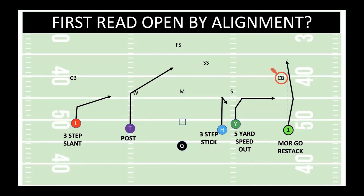We are in our empty set and we are running the concept fade out. I want you to focus on this cornerback and this receiver. This receiver is the first read in our progression. In fade out, the progression goes go, out, stick — so let's focus on the go route since it's the first read in our progression.